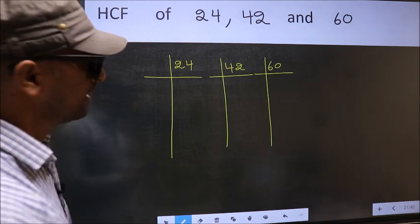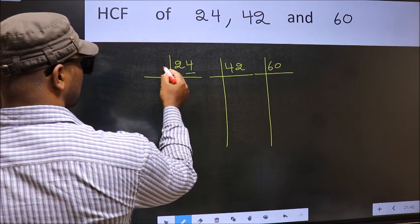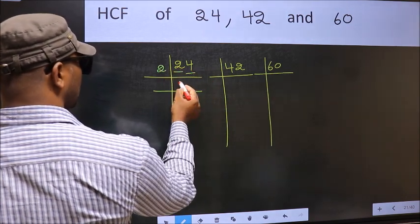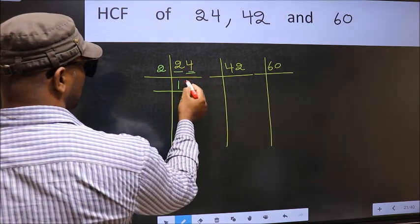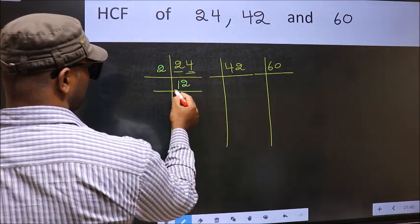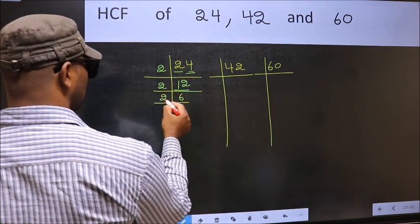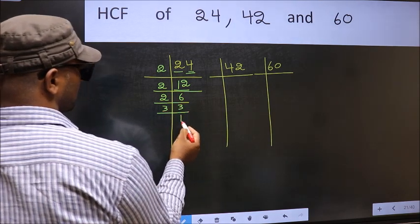Next, in this number, last digit 4, even, so take 2. First number 2—when do we get 2 in the 2 table? 2×1 is 2. The other number 4—when do we get 4 in the 2 table? 2×2 is 4. Now 12: 2×6 is 12. 6 is 2×3 is 6. 3 is a prime number, so 3×1 is 3.